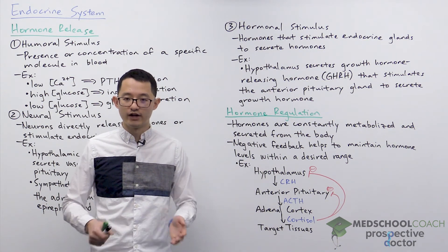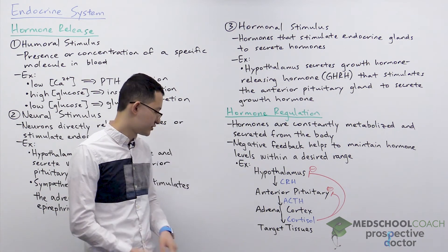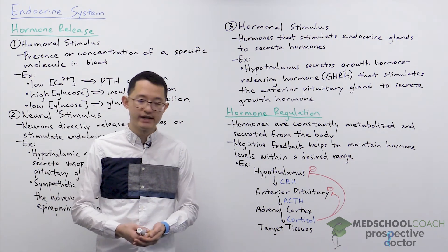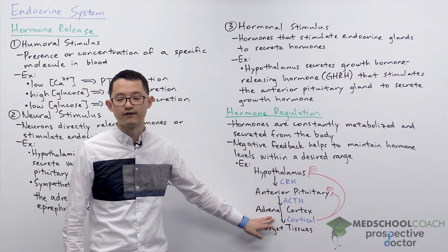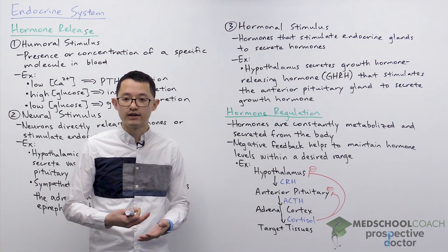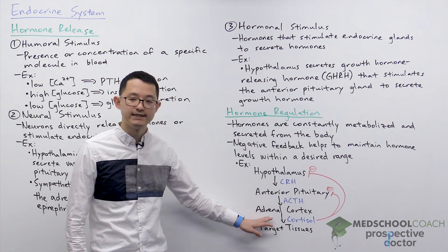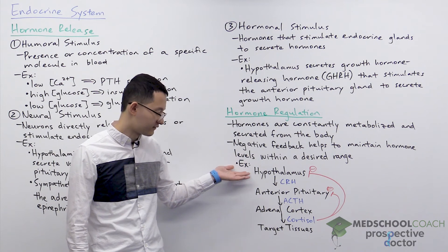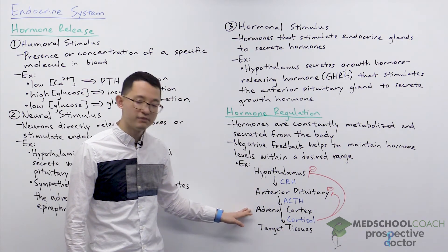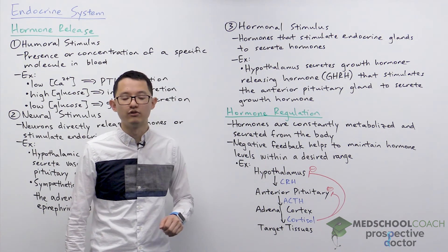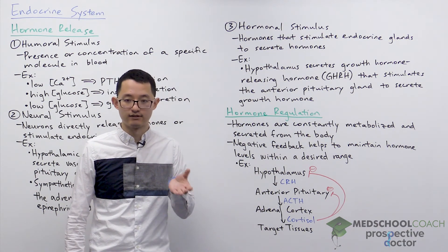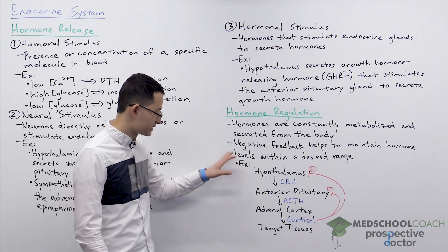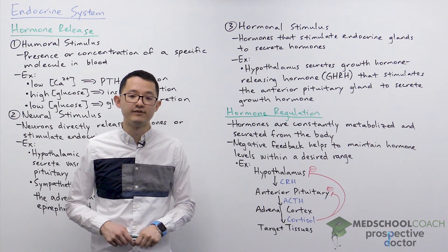An example of how this is helpful is when a person has damage to one of their adrenal glands. If one adrenal gland is damaged, there will be a lower release of cortisol. As cortisol levels drop, there will be less negative feedback on the hypothalamus and anterior pituitary, resulting in increased secretion of CRH and ACTH. This will then stimulate the remaining adrenal gland to secrete more cortisol to bring levels back to the desired range. Of course this is just one example — there are many others — but it illustrates the general mechanism of negative feedback.